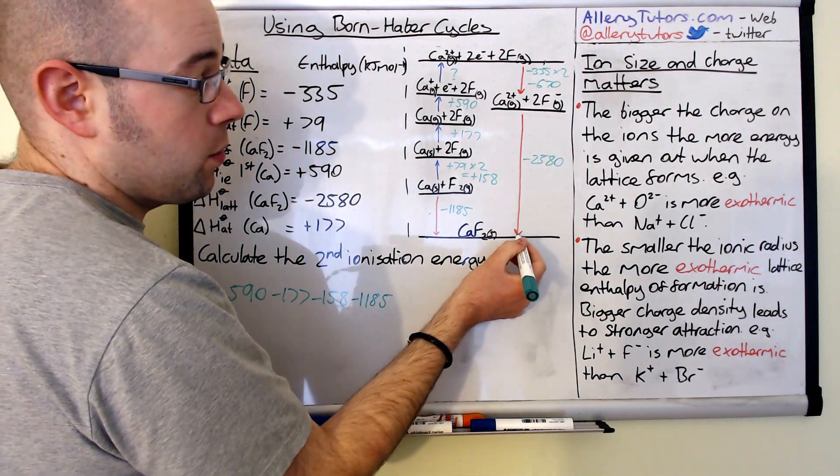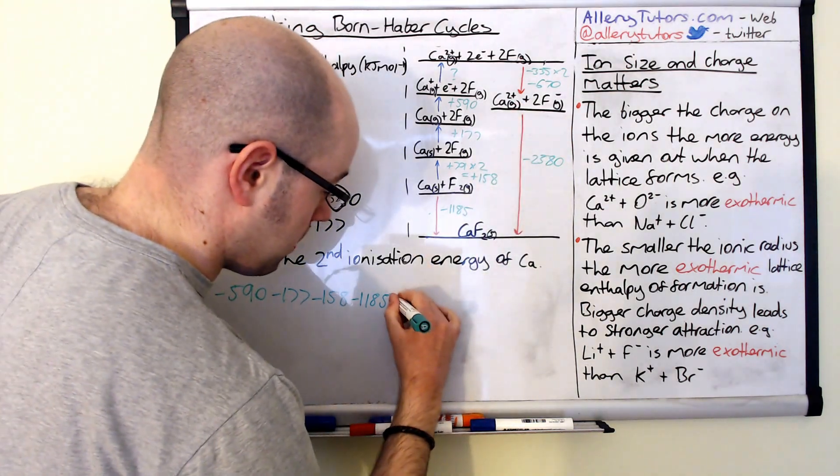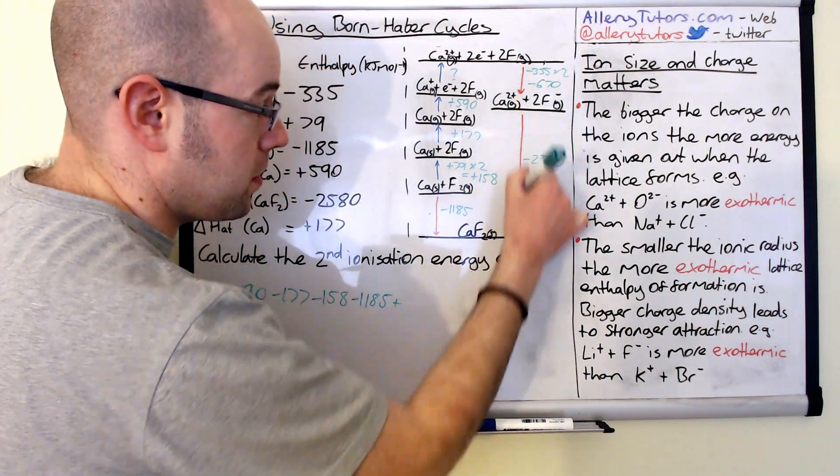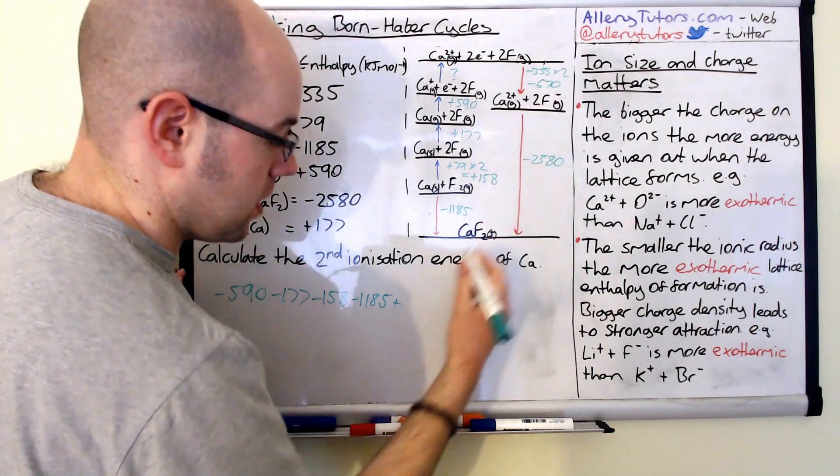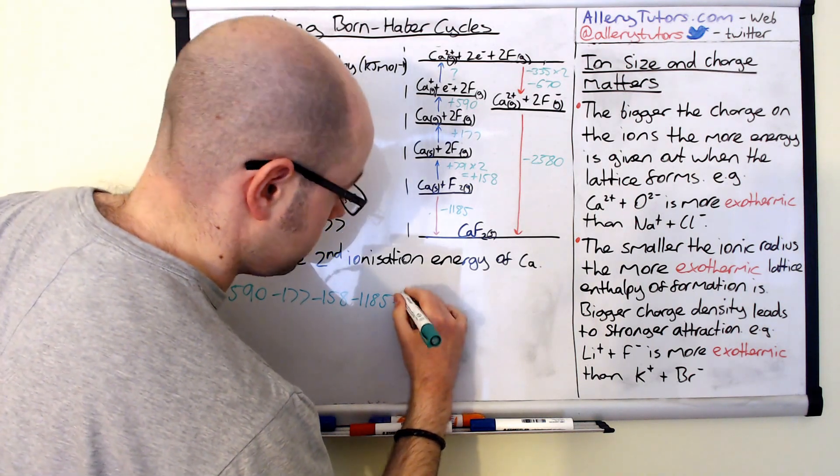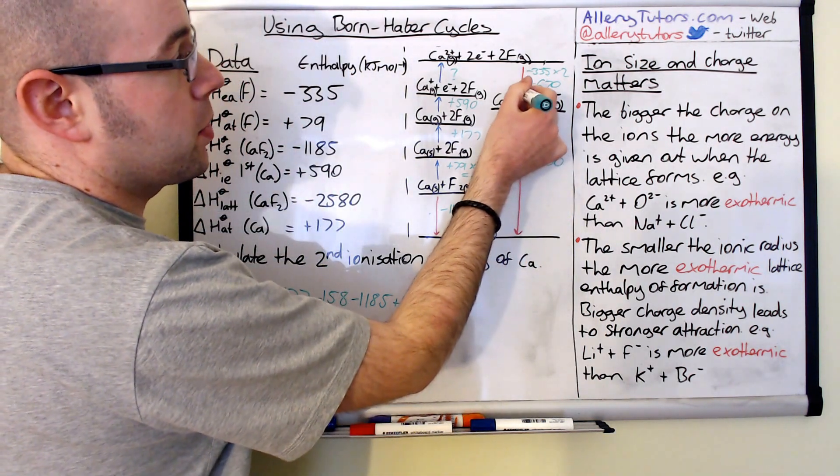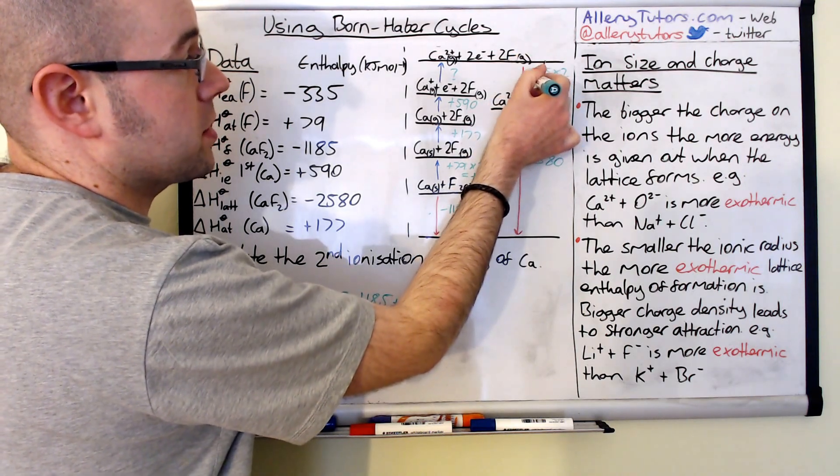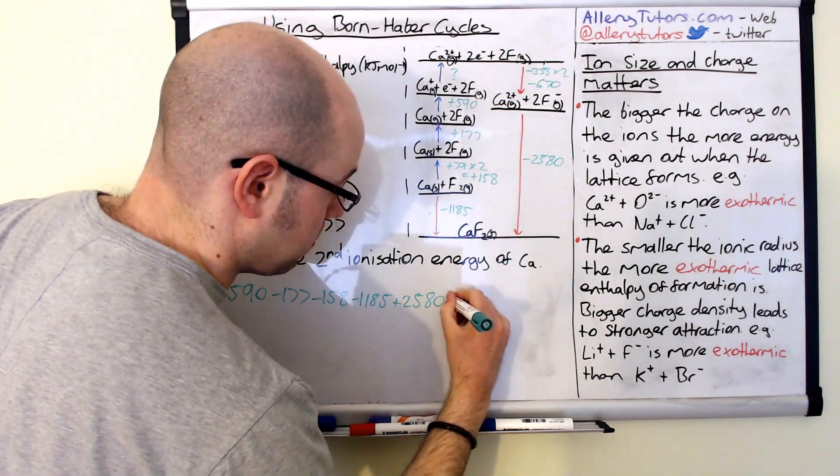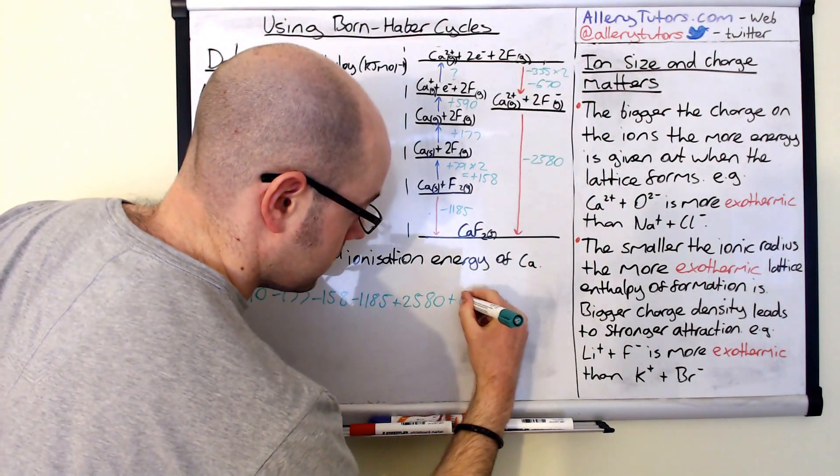Okay. And then this arrow we're going against this arrow. So that's going to be a plus. Because that's negative going that way. Because we're going against it we change the sign. So that's plus 2580. Okay. And then we're going to go against this arrow. So that's going to be a plus as well. So that's going to be plus 670. Okay.